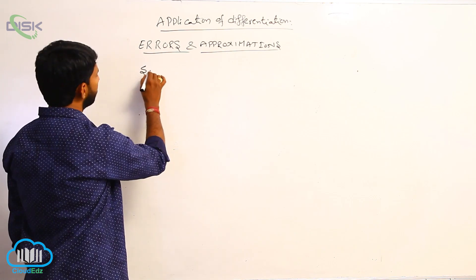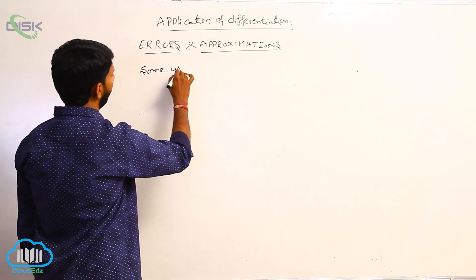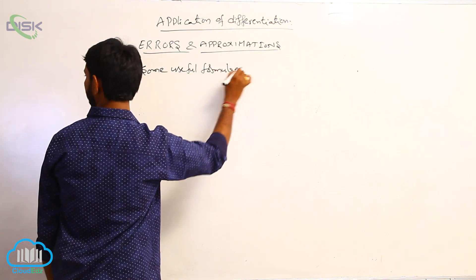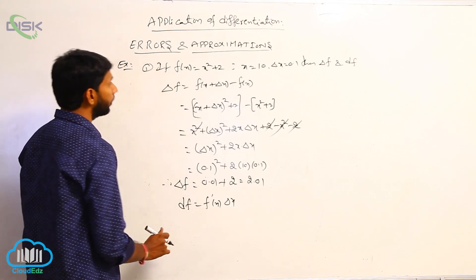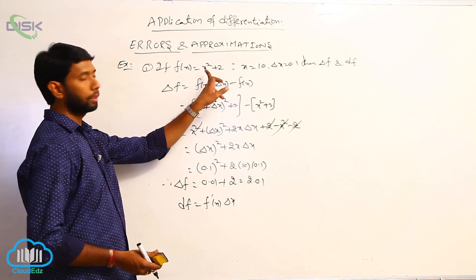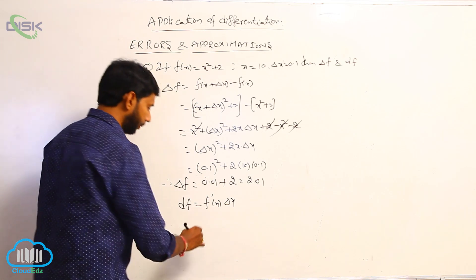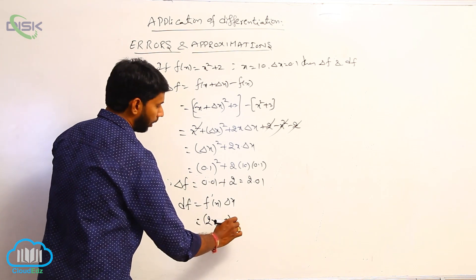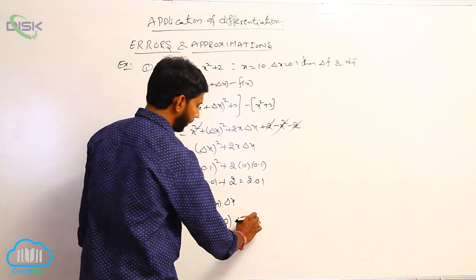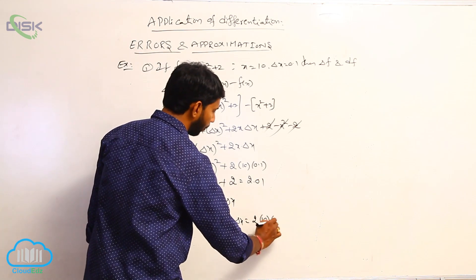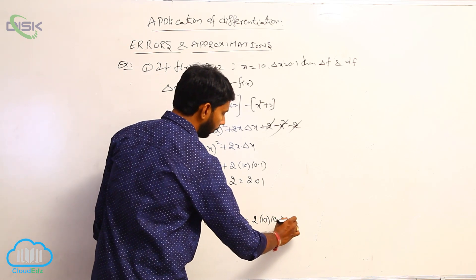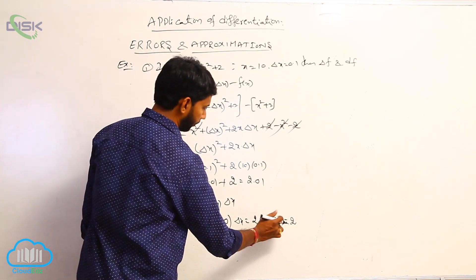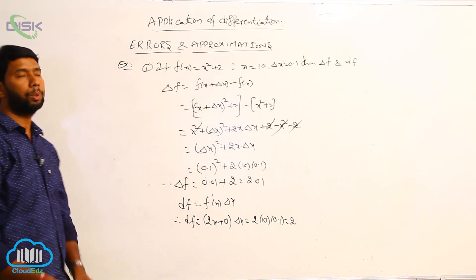Some useful formulas. Here, if f(x) = x² + 2, then the derivative is 2x + 0, multiplied by delta x. Substituting x = 10 and delta x = 0.1, that is 2 × 10 × 0.1 = 2. Therefore df = 2.